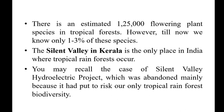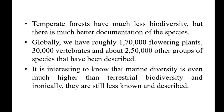Coming to temperate forests — temperate forests have much less biodiversity compared to tropical rainforests, but there is much better documentation of species there. Globally, we have roughly 1,070,000 flowering plants, 30,000 vertebrates, and 2,050,000 other groups of species that have been described. Marine diversity is even much higher than terrestrial biodiversity, yet ironically they are still less known and described.